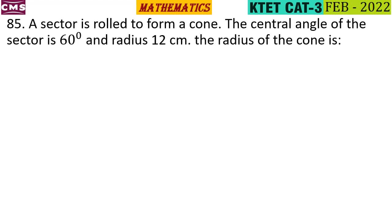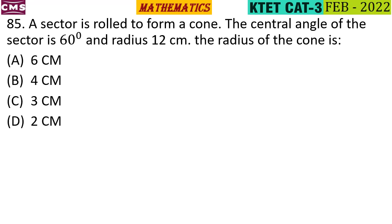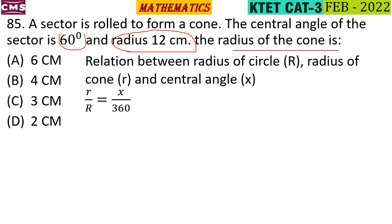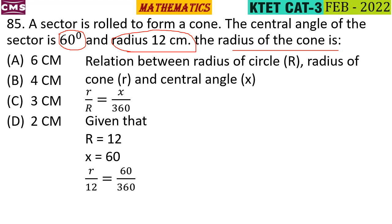A sector is rolled to form a cone. The central angle of the sector is 60 degrees and the radius is 12 cm. The formula used is r by capital R equals x by 360, where the central angle x is 60 degrees and the slant height capital R is 12.